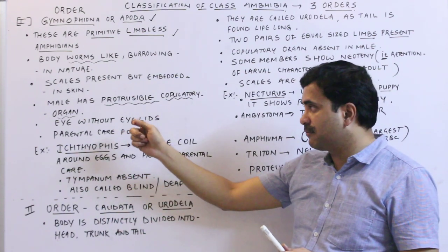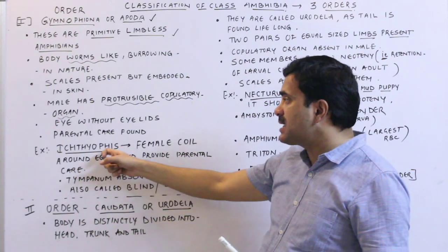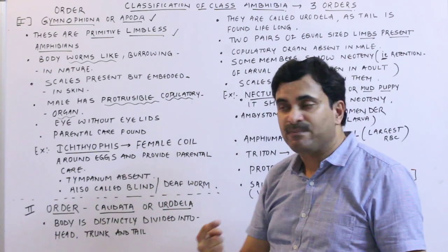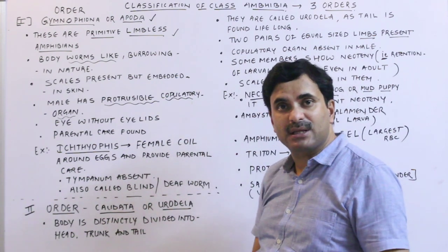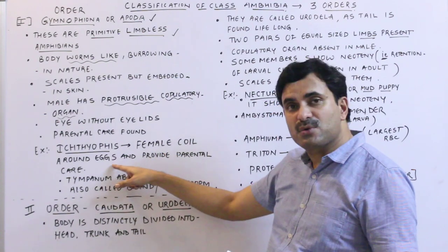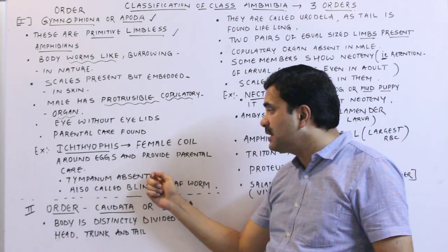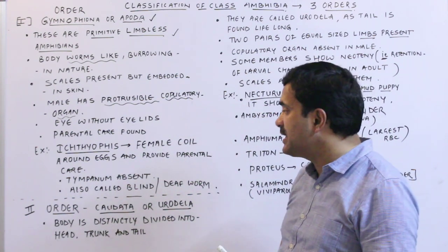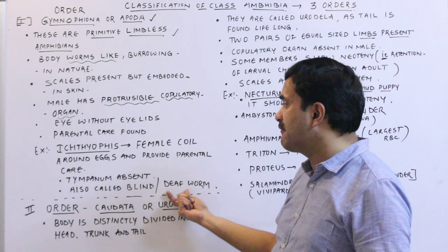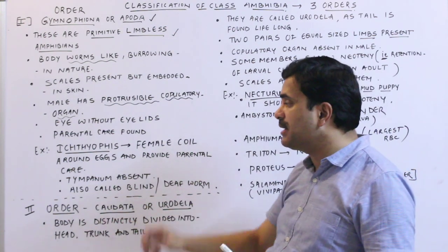The best example of Order Gymnophiona is Ichthyophis. In Ichthyophis, the female coils around the eggs and provides parental care. Also remember that in Ichthyophis the tympanum is absent, so it cannot hear — that's why it is called a deaf form. It is also called a blind form. So Ichthyophis is a very important member of Order Apoda.